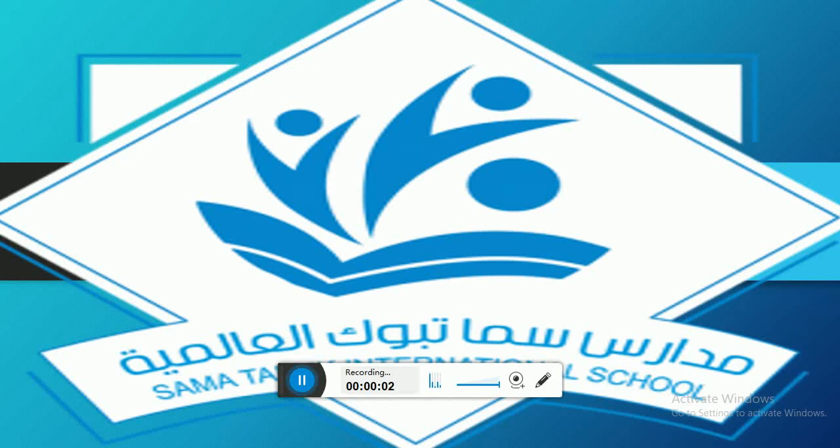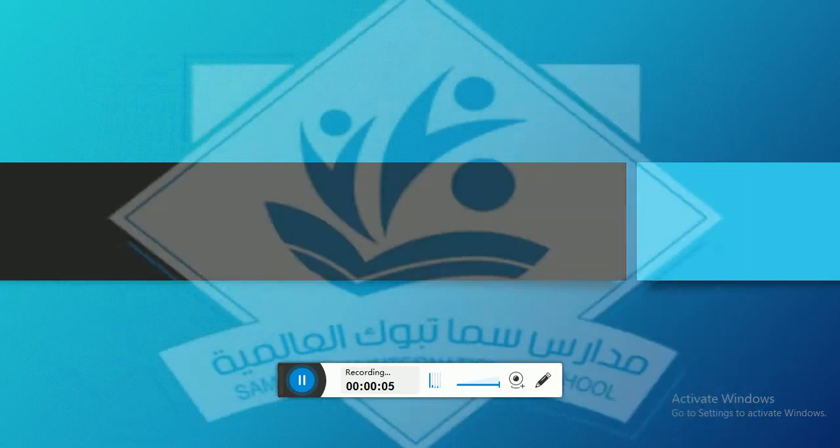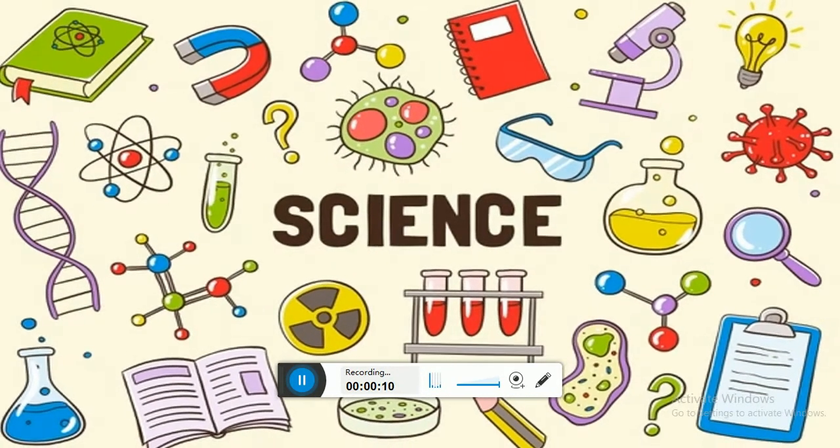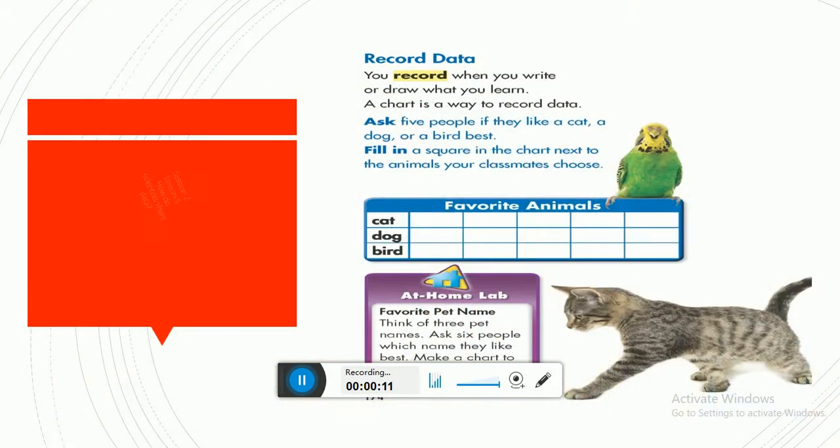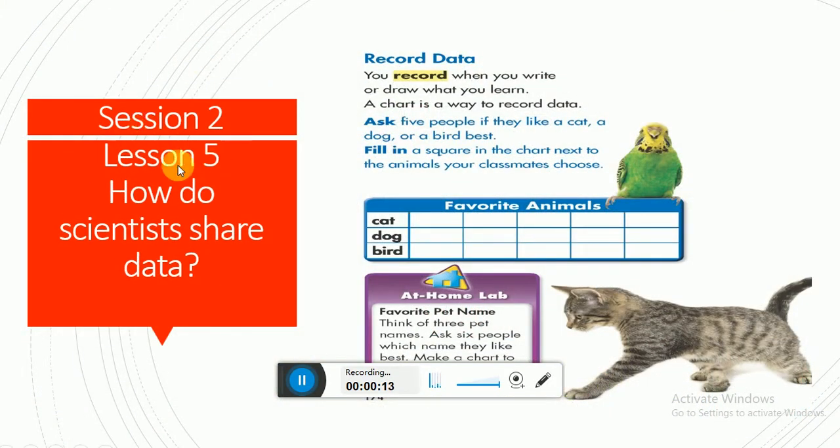Hi guys, assalamu alaikum warahmatullahi wabarakatuh. Samata Book International Schools, and we study science together. Today we're going to talk about Lesson 5: How do scientists share data? This is Session 2. You can find this lesson in the book page 174.